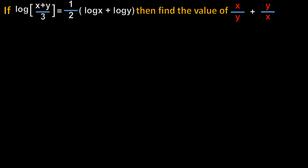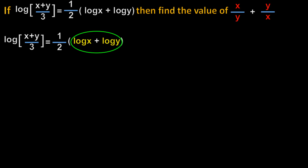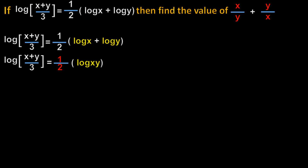We have log (x + y) / 3 = 1/2 into (log x + log y). Now on the right hand side, inside the bracket, we have the sum of the logarithms of two terms, x and y. So it seems to be in the form of the product rule. By applying the product rule we get the logarithm of the product of these two numbers, that is log(xy). So log x + log y can be written as log(xy), giving us log (x + y)/3 = 1/2 into log(xy). Now observing the right hand side, 1/2 into log(xy) looks like the power rule.